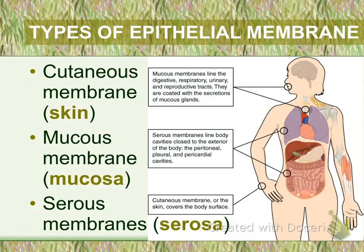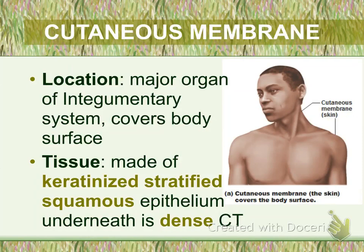There are three types of epithelial membrane. These are: cutaneous membrane, which includes the skin or any coverings of the body; mucous membrane, also called the mucosa, which includes locations such as the digestive, respiratory, urinary, and reproductive tract; and serous membrane, also called serosa, which is found in areas not open to the exterior.